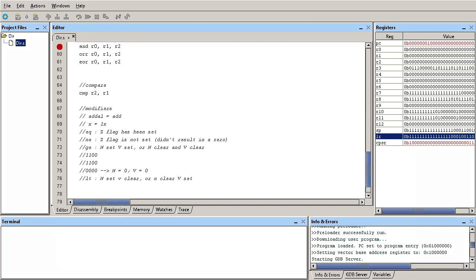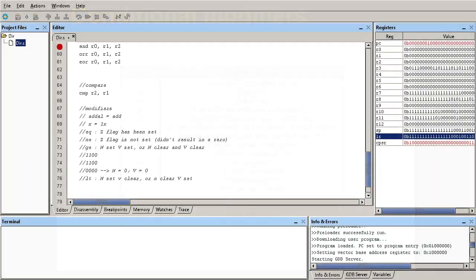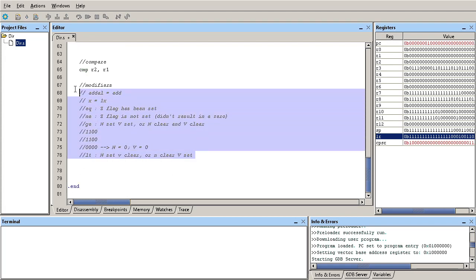I'll show you the complete list of modifiers. You can look them up on your own to see what they mean. The left column shows the modifiers you can append to instructions: AL for always, EQ for equal, NE for not equal, GE for greater or equal to, LT for less than, and so on. The right column explains the combinations of flags that reflect each condition. I showed you the greater or equal to example and explained how you can append these to your instructions.